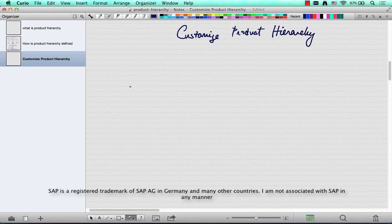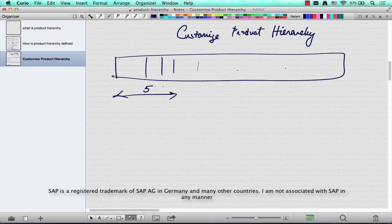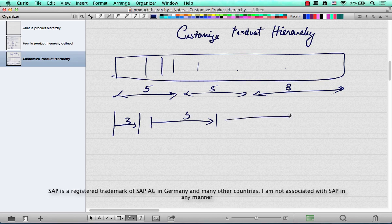And how do you do that? So you have these 18 characters, right? And the way the system divides it by default is 5-5-8. And how can you customize it? You can customize it any way you want. You can have 3-5 and then 3, that's 8 plus 3 is 11, and then you can add 7. That's possible.